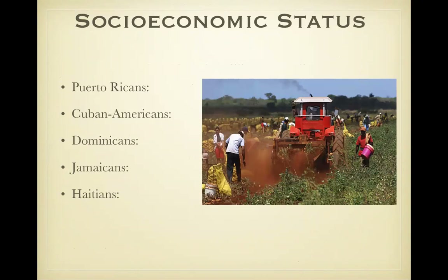Socioeconomic status. Puerto Ricans have the highest rate of unemployment among Latinos, currently at 28%. This is higher than the U.S. average of 16% and even higher than the Hispanic average of 26%. This is for first-generation Puerto Ricans; second-generation Puerto Ricans have a better socioeconomic status and not as many are living in poverty. Cuban Americans have lower unemployment rates. Dominicans have lower median family incomes. Jamaicans many work in professional, managerial, or technical jobs, and Haitians often work in migrant labor or service positions.